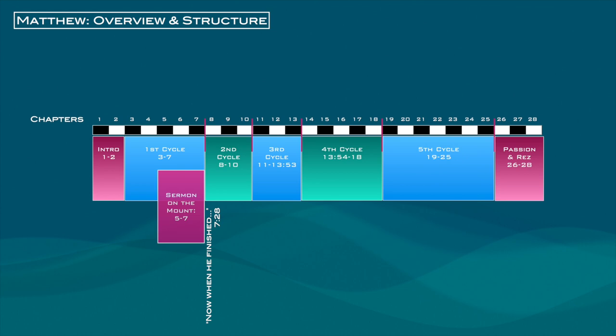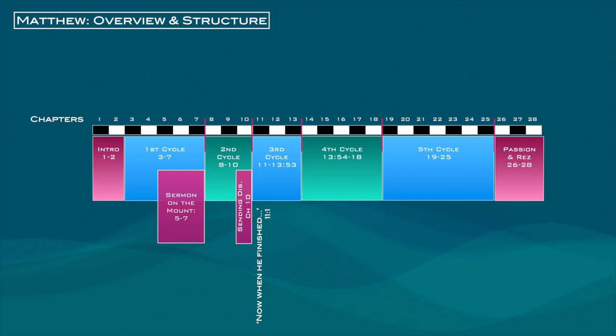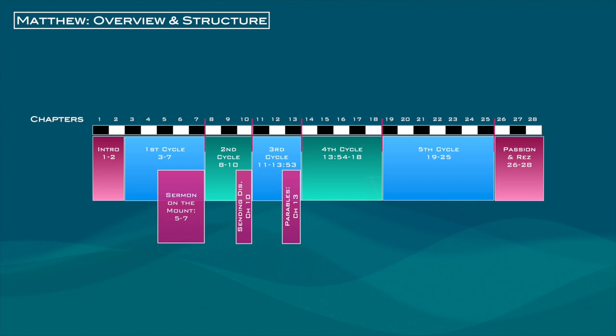The rest of the Gospel follows this pattern — a collection of Jesus' deeds followed by a collection of his teachings. Chapters 8 through 9 are Jesus' deeds; chapter 10 is Jesus' instructions to his disciples when he sends them out two by two. Then we have a transitional statement to two chapters of Jesus' deeds in chapters 11 through 12. This reaches a climax with an extended collection of Jesus' parables in chapter 13. Notice how this collection of parables in chapter 13 falls just about at the dead center of the Gospel. We then move into the fourth cycle at the end of chapter 13: chapters 14 through 17 are a collection of Jesus' deeds, and then chapter 18 is an extended collection of Jesus' teachings once again.